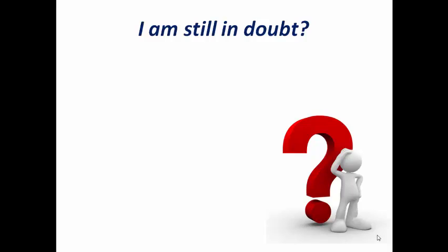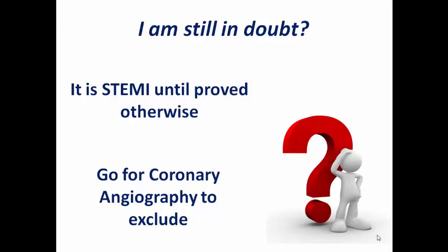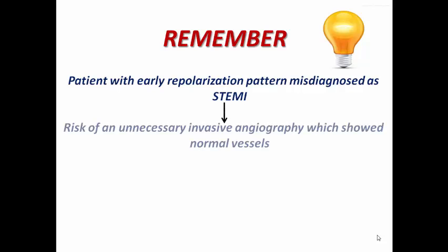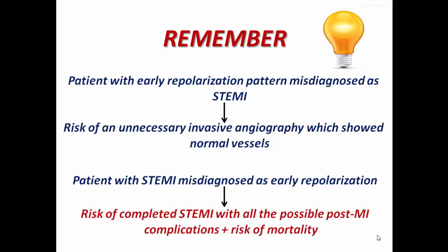If you are still in doubt and cannot decide whether it is STEMI or early repolarization pattern, treat it as STEMI until proven otherwise, and proceed to coronary angiography to exclude it. If you cannot safely conclude this patient has only early repolarization, go for coronary angiography. A patient with early repolarization misdiagnosed as STEMI faces only the hazard of an unnecessary invasive angiography showing normal vessels. But a STEMI patient misdiagnosed as early repolarization risks completed myocardial infarction, post-primary complications including arrhythmias, mechanical complications, long-standing ventricular dysfunction, and mortality.